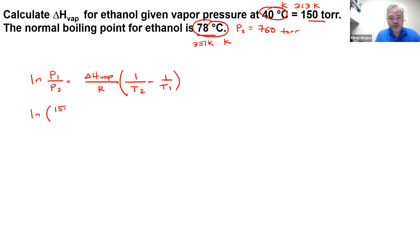So we have 150 over 760, and the one that we're looking for here, this is 8.314 Joules per K mol, and this equals to 1 over 351 minus 1 over 313.